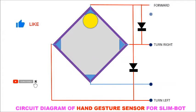Due to the two diodes, the forward signal is converted to both right and left turn signals as shown. Thus the slim boat moves forward.